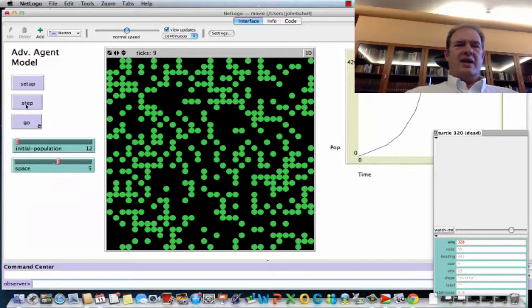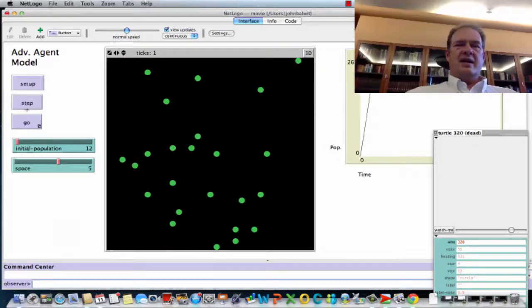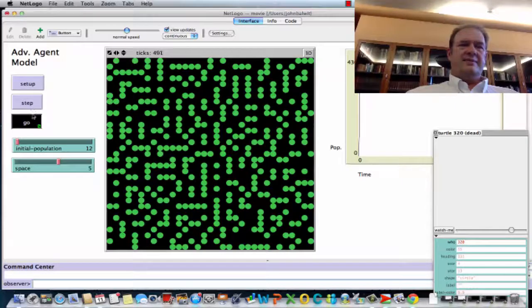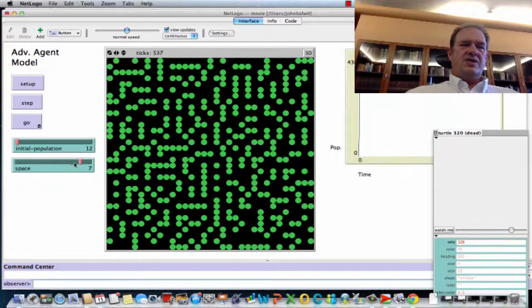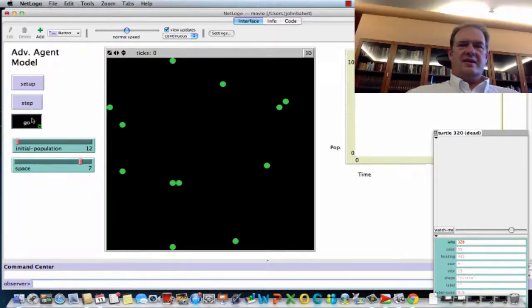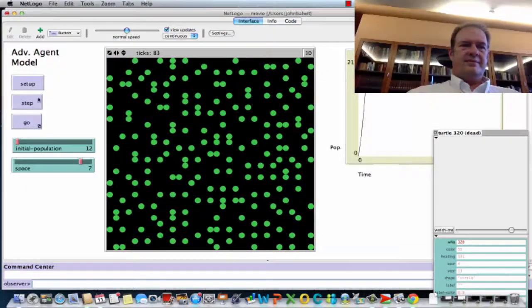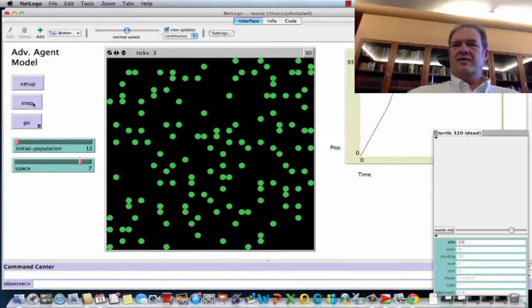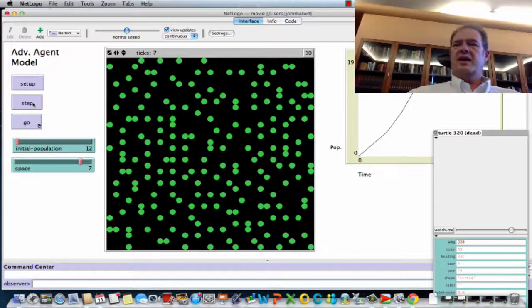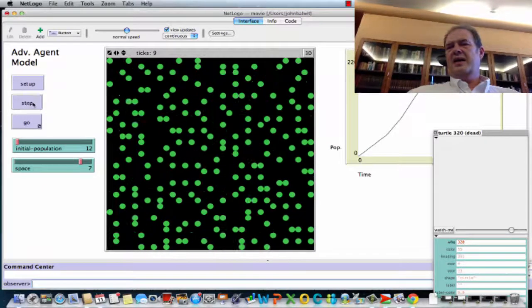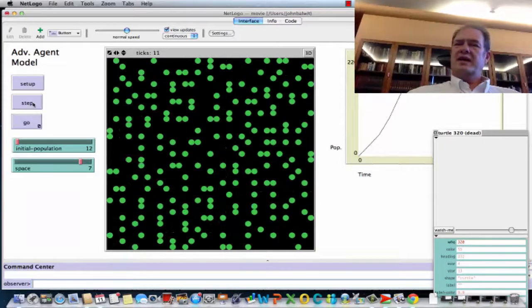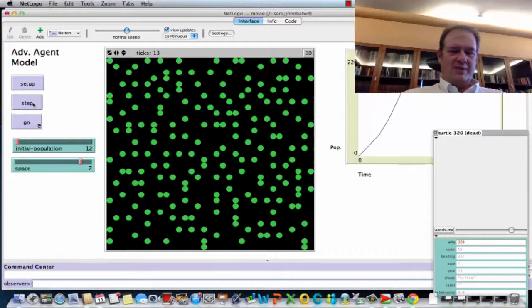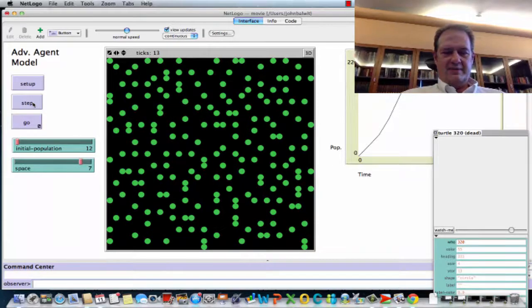We have a nice little model that has constraints, uh, and, um, at certain space settings, does, um, an okay job of modeling exponential growth and, um, a kind of a rounding off to a carrying capacity. So, there you have it. John Baldwin, signing out.